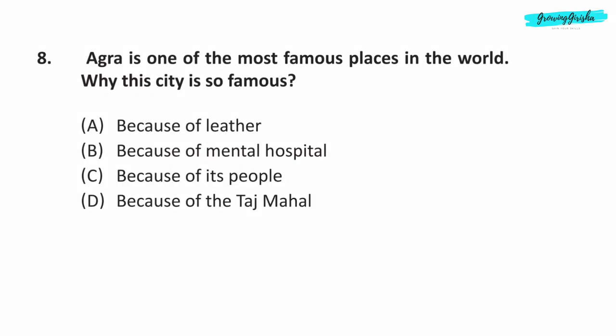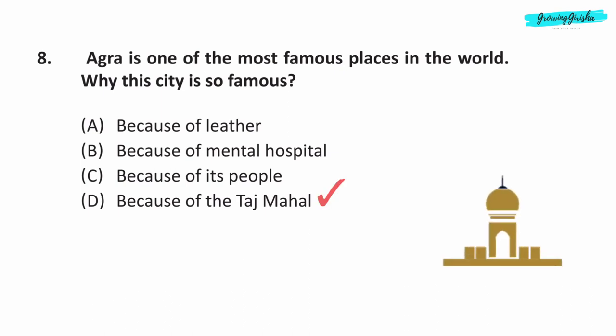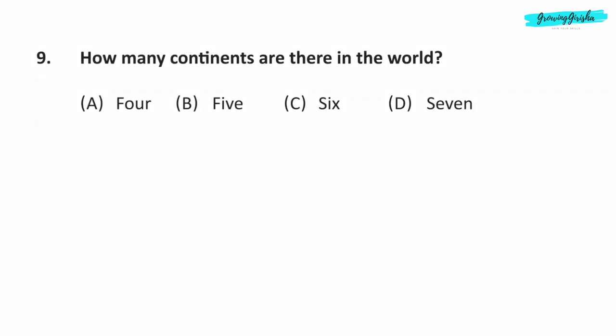Question 8. Agra is one of the most famous places in the world. Why is this city so famous? Option D: Because of the Taj Mahal, which is one of the seven wonders of the world.